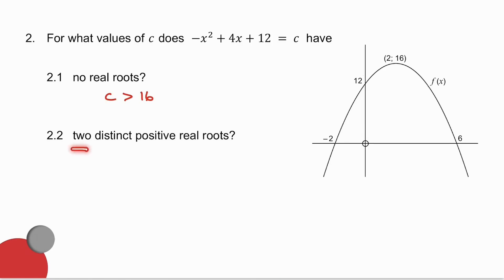The second question, I want two distinct, distinct means different, positive real roots. Okay, so if I take a horizontal line here, my graph cuts it twice, but one of the values is negative. If I take it here, it still cuts it twice, but that x value is negative. If I take it here, it cuts twice, but this x value is zero. Zero is not positive. If I take it just above, a horizontal line is cutting the parabola in two different places, both of which the x values are positive. So that's fine. What happens when I get to the turning point?